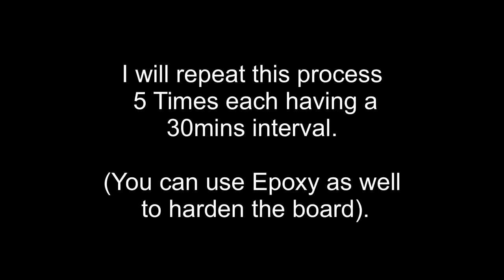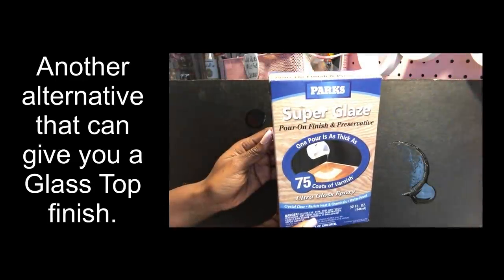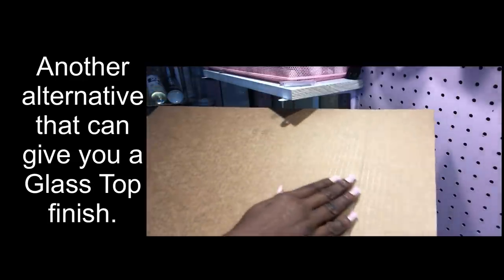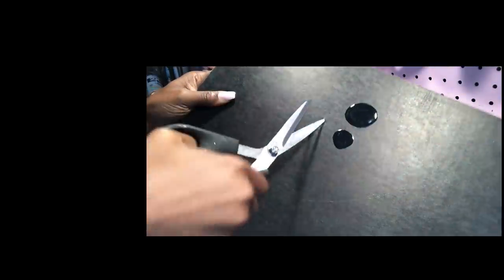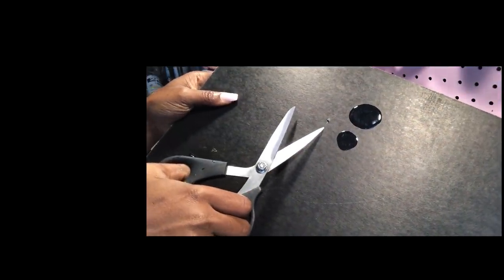Another alternative to making the board hard is to use epoxy. This is a more expensive route, but it's gonna give you a glass top finish. Now this is just a droplet from another project. And with the scissors, you can pierce through a cardboard so easy, but not through the epoxy.